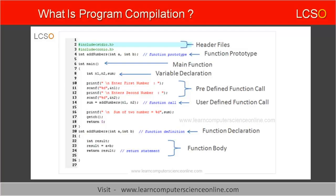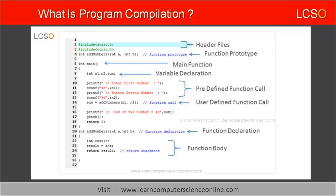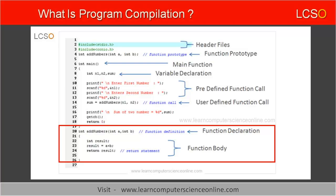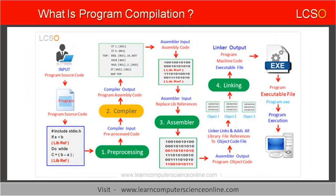In C programming, the standard library functions are stored in a separate header file with a .h extension. Separate header files help to better organize the program code and improve readability. The programmer can include standard function header files as well as other files containing user-defined functions into the program, depending upon the functionality of the program. Let us now move on to the next stage.